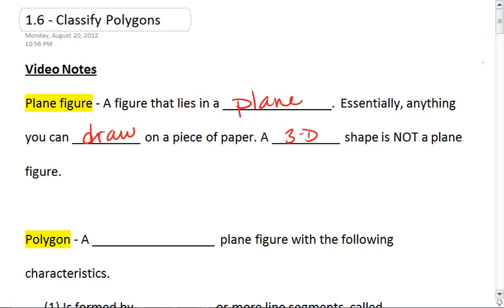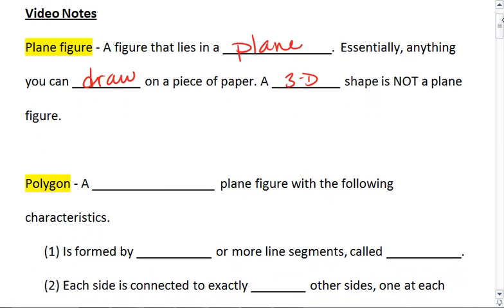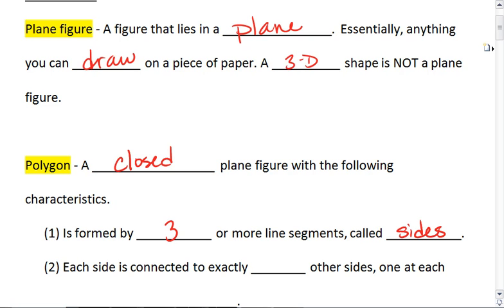We're going to study a specific type of plane figure called a polygon. A polygon is a closed plane figure with the following characteristics. It is formed by three or more line segments, which we call sides, and each side is connected to exactly two other sides.